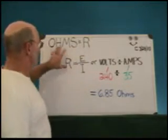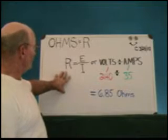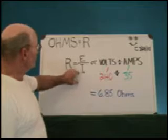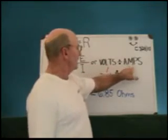Ohms is equal to resistance. One of the formulas is resistance is equal to volts divided by amps. Volts divided by amps.